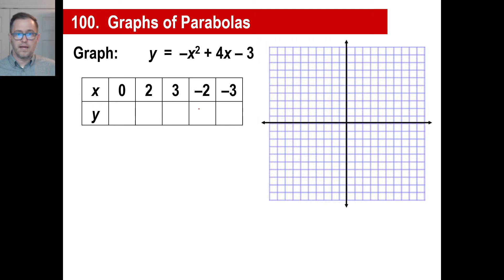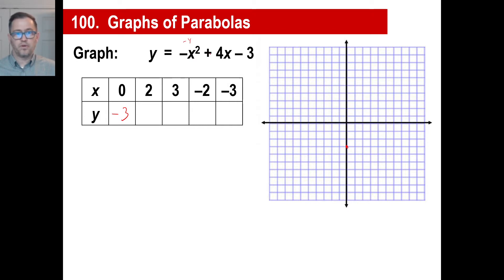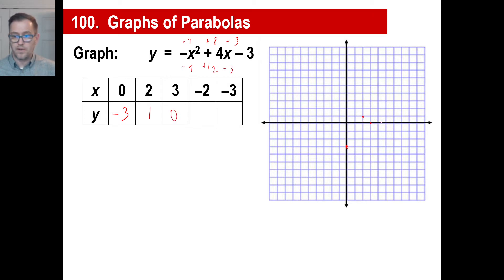Let's look at the second equation and graph this parabola. If x is 0, y is going to be negative 3. If x is 2, then negative 2 squared is negative 4, plus 8 minus 3 — that gives 4 minus 3, which is 1. So at x equals 2, y is 1. If x is 3, negative 9 plus 12 minus 3 equals 0. So the point is (3, 0). For x equals negative 2, negative 4 minus 8 minus 3 gives negative 15.